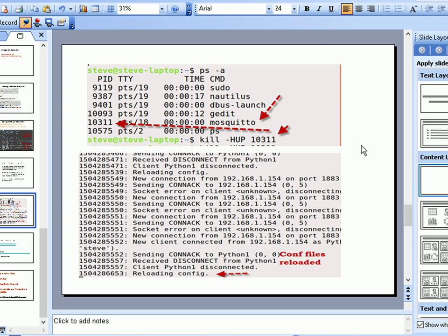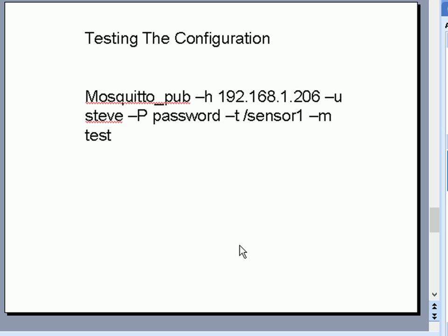Now we need to test the configuration using the mosquitto_pub utility from the client tools. I've got it running on my Linux server and I'm pointing it there. Minus u for the username, capital P for the password (note: small p is for port number), then a topic and a message.